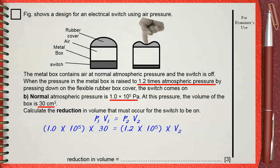Now the rubber cover is pushed until the switch comes on. At this case, the new pressure is 1.2 times 10 power 5 pascals, which is 1.2 times the normal atmospheric pressure. Now we want to find the new volume, in case the switch is on.